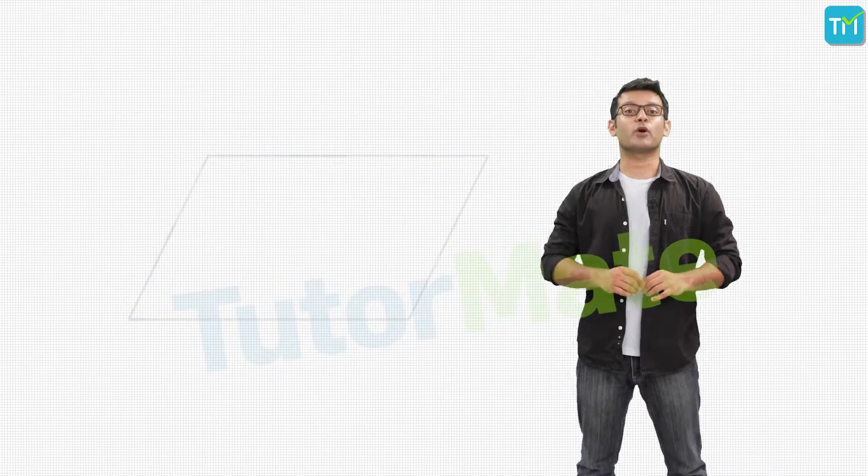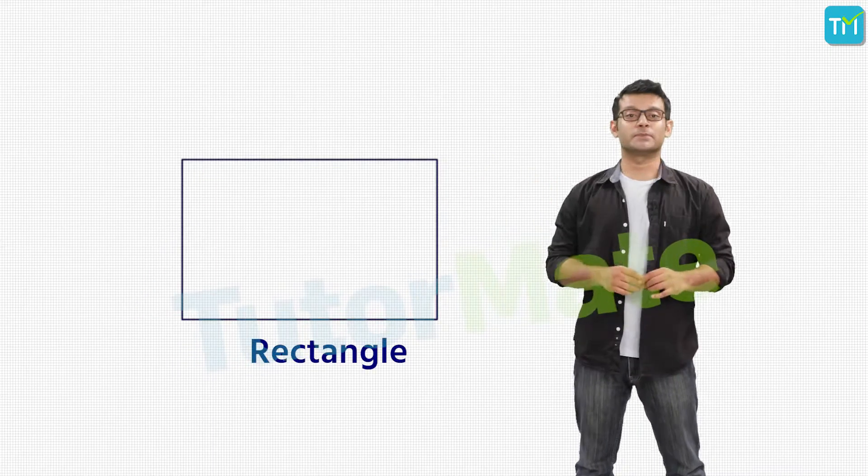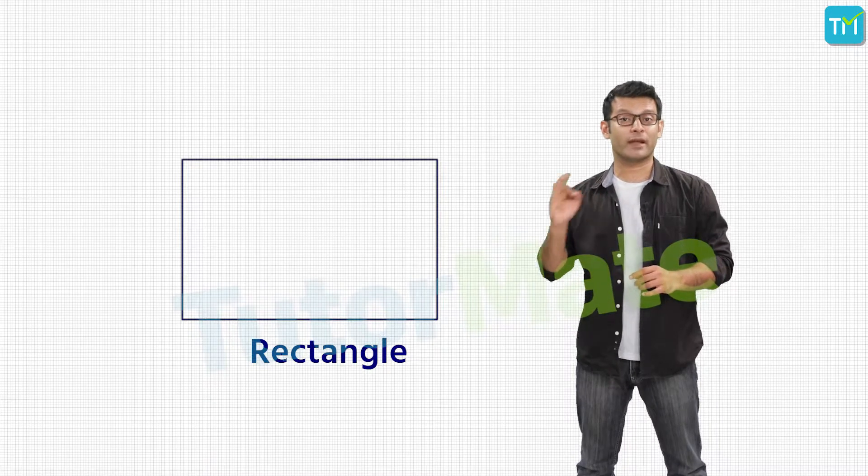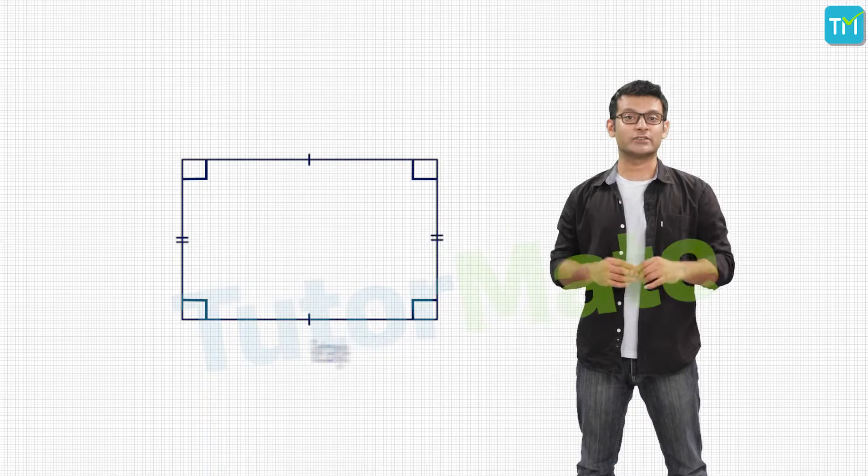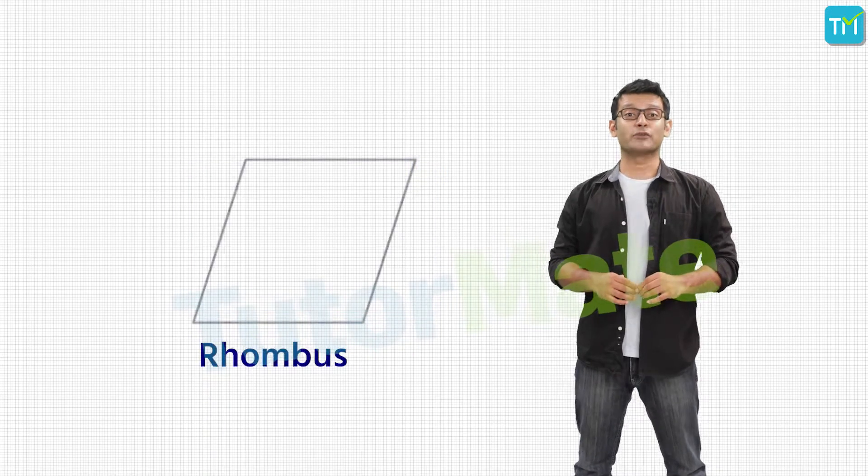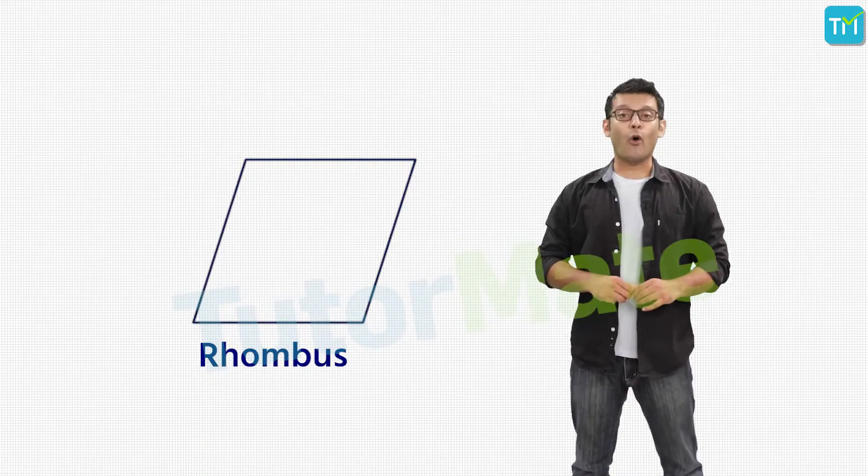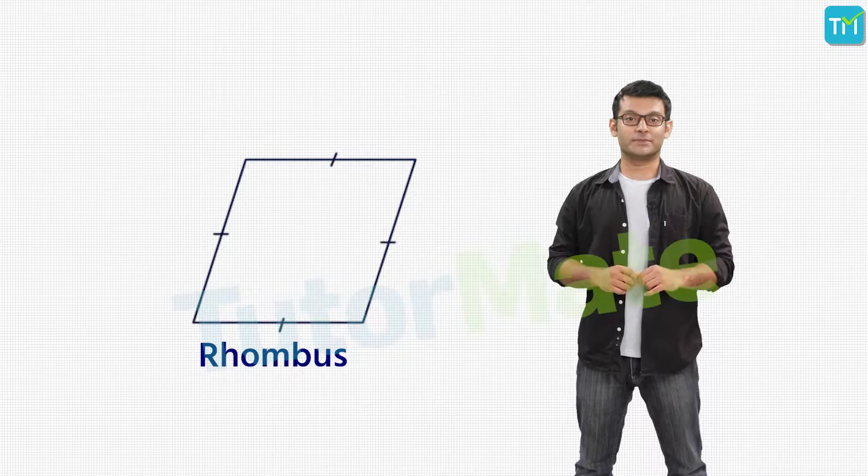The third type of quadrilateral is a rectangle, which is actually a special type of parallelogram, where all the angles of the parallelogram are right angles. And then we have the rhombus, where all four sides are equal.